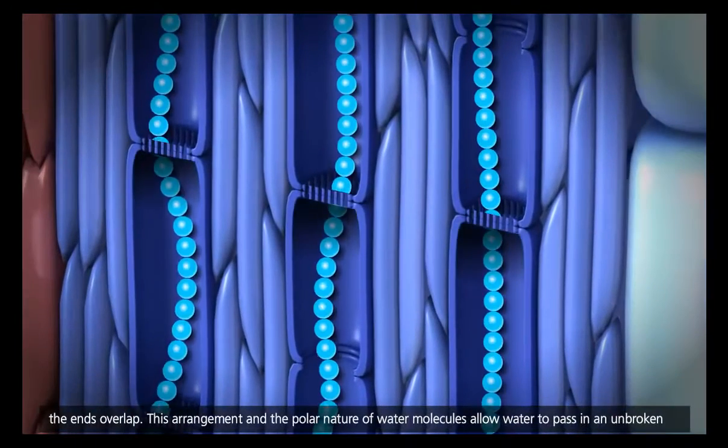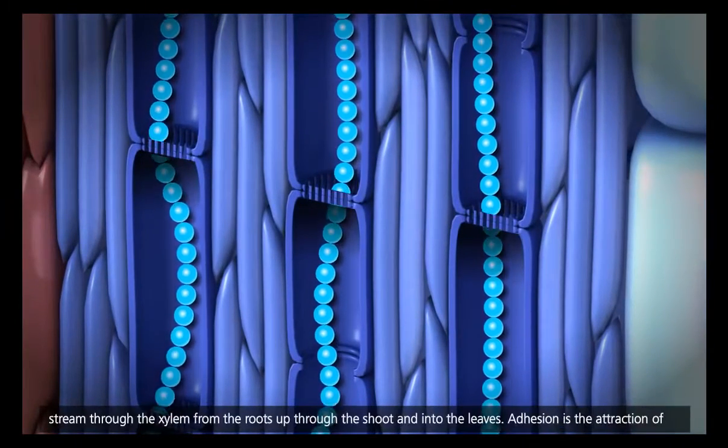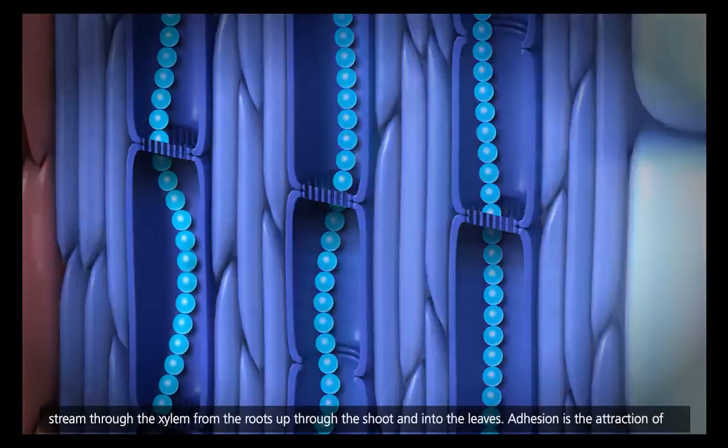This arrangement, and the polar nature of water molecules, allow water to pass in an unbroken stream through the xylem, from the roots, up through the shoot, and into the leaves.